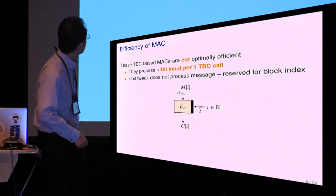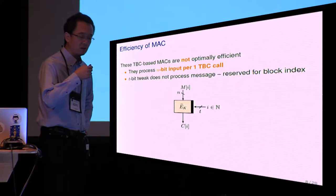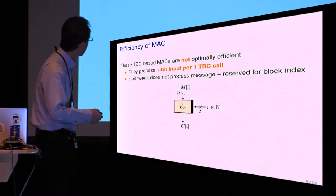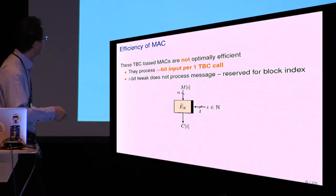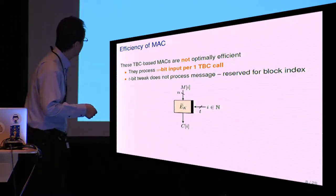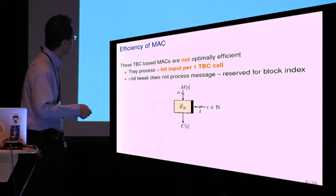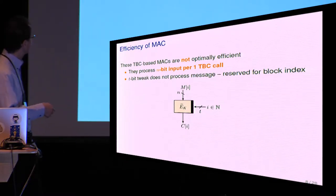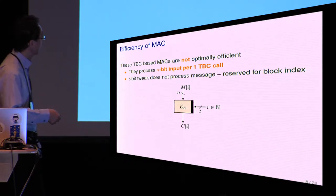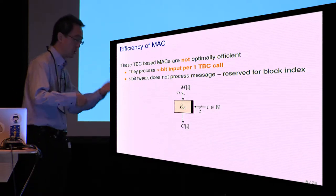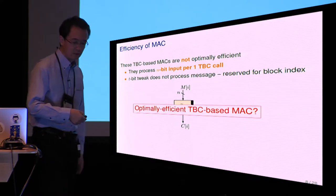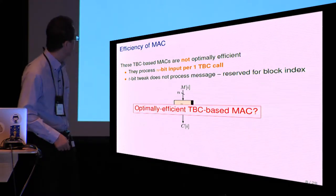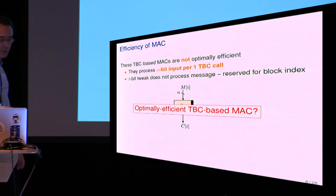But these TBC-based schemes are not optimally efficient, because they process n-bit input per one TBC call. In these schemes, the internal TBC is invoked like this one. However, the TBC tweak does not process message, it is reserved for computing the block index. So the simple question is: how to build an optimal rate TBC-based MAC?